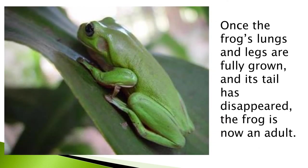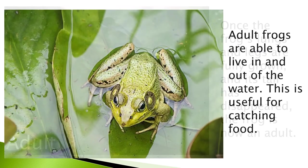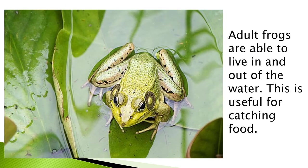Once the frog's lungs and legs are fully grown and its tail has disappeared, the frog is now an adult. Adult frogs are able to live in and out of the water, which is useful for catching food.